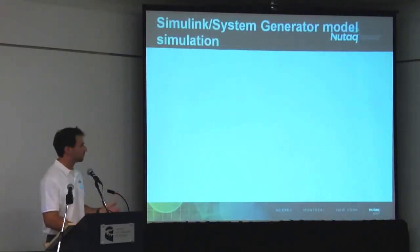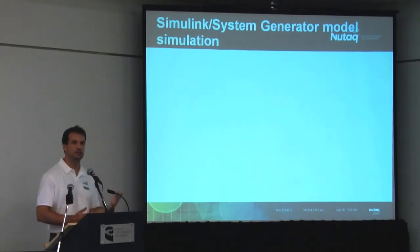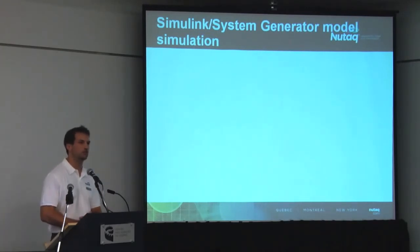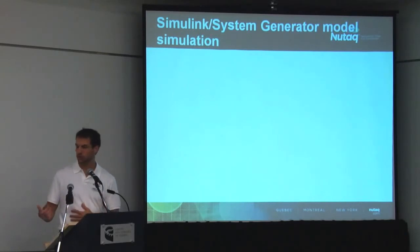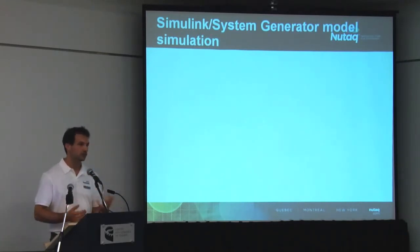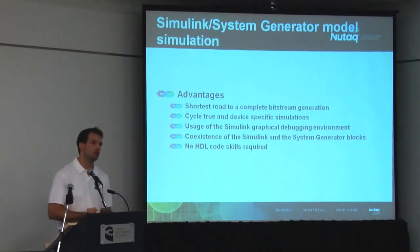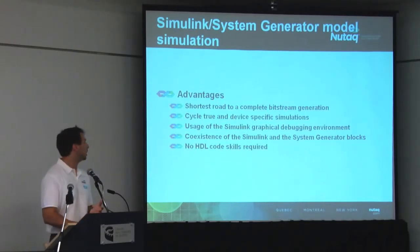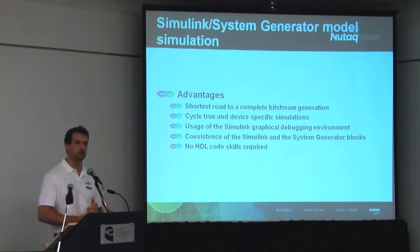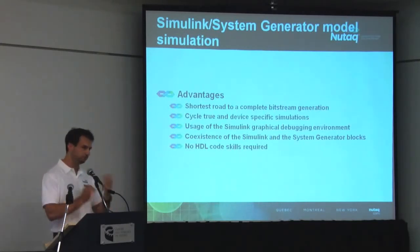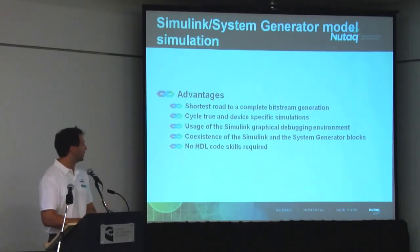Now that our proof of concept is validated in M code — preamble generated and detected — the next move is to generate HDL code for an FPGA platform. The tool we use is Simulink with the System Generator block set, as Louis-Philippe introduced. To me it looks like the shortest road to a complete bitstream generation — not only producing the HDL code but also handling latency constraints, timing issues, and generating the final bitstream in a straightforward way.